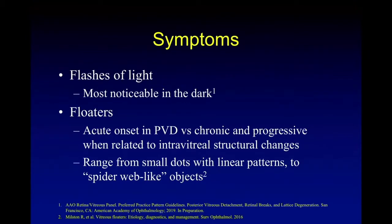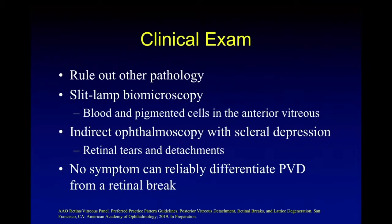Symptoms include flashes of light, which may be more noticeable in the dark, and floaters that bother a lot of people in middle age and later in life. In clinical exam, the most important thing is to rule out other pathology — we examine to make sure there is no retinal tear or retinal break that needs treatment. Slit lamp biomicroscopy is helpful. If we see blood or pigmented cells, that's an indicator that the risk of retinal tear is higher, and we need to be more careful in examining the peripheral retina. The gold standard of examination is indirect ophthalmoscopy and scleral depression — the goal is to see the ora serrata 360 degrees and ensure there is no tear. We can also use contact lenses, for example the three-mirror contact lens, to see the ora serrata better.